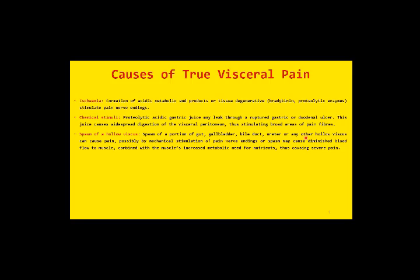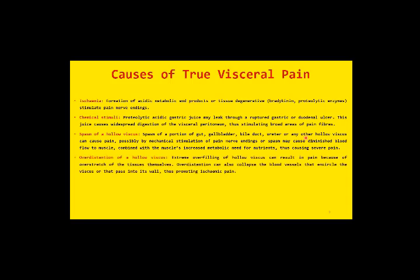Other causes of visceral pain include spasm of a hollow viscus — such as the intestine, gallbladder, bile duct, ureter, or blood vessel — which can cause severe pain. Also, over-distension of a hollow viscus may promote ischemic pain; for example, overfilling of the stomach causes over-stretching of stomach tissues.